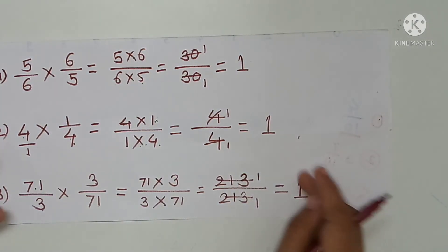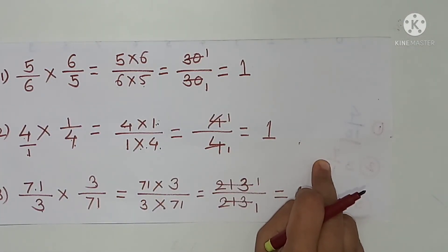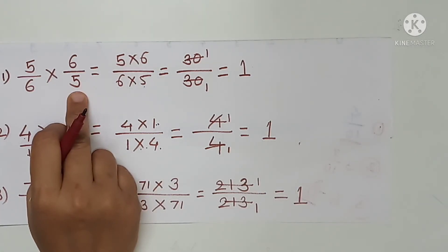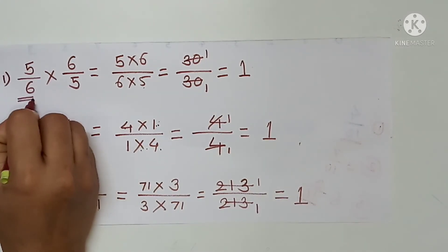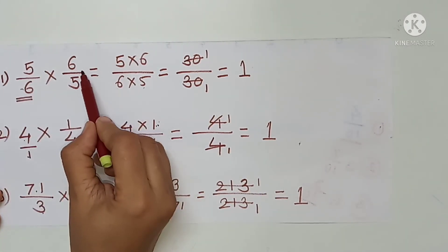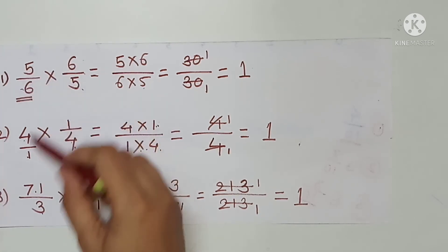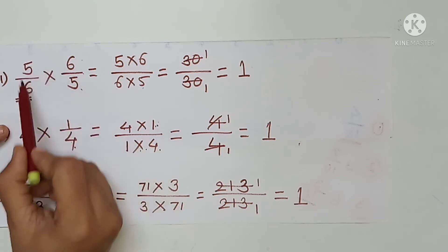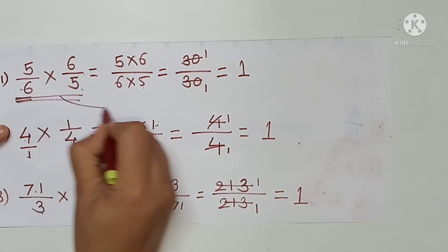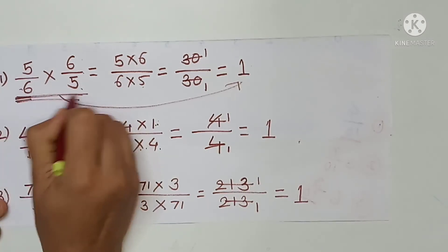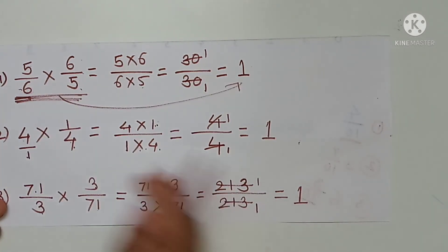If we observe all these multiplications, what is the peculiarity? A fraction is multiplied by another fraction obtained by exchanging the numerator and denominator of the first fraction, and the product is always 1. For example, 5 upon 6 multiplied by 6 upon 5 gives 1. This pair is called reciprocal and multiplicative inverse of each other.